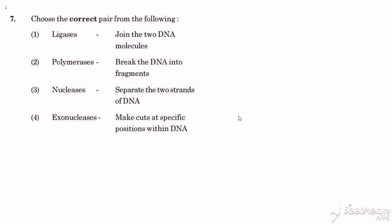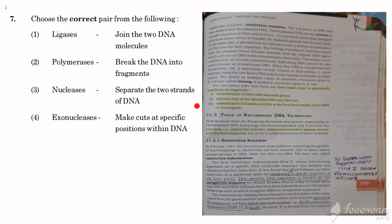Moving on to question 7: Choose the correct pair from the following. The options list enzymes — ligase, polymerase, nucleases, exonucleases — paired with functions. These enzymes are used in our DNA recombinant DNA work. This is from class 12, Biotechnology: Principles and Processes chapter, which is a very important chapter. The question is about restriction enzymes.